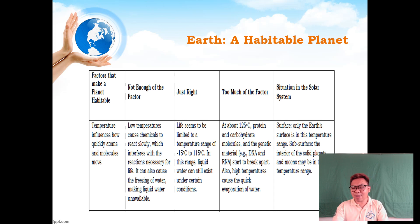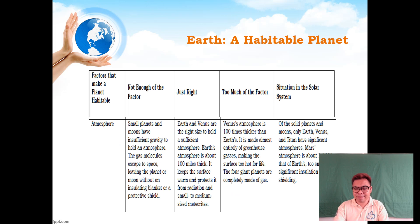Now let's talk about the second factor: atmosphere. When it's not enough, small planets and moons have insufficient gravity to hold an atmosphere. Gas molecules escape to space, leaving the planet or moon without an insulating blanket or protective shield. Without atmosphere, a planet is open to different kinds of debris in the solar system.